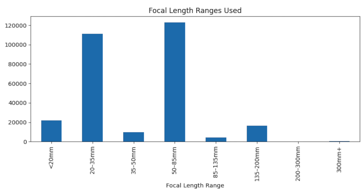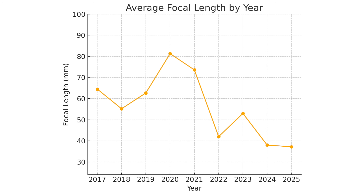Looking at focal length ranges, I shoot a lot between 20 and 35mm — most of that is at 35mm — a little between 35 and 50, and quite a bit between 50 and 85. I've also shot a decent amount between 135 and 200mm. The average focal length by year is very telling: I was shooting between 60 and 70mm early on, spiked in 2020 when I picked up the 70-200, and then sharply dropped to about 38mm in 2025 because I really enjoy that 35mm prime. I do want to start shooting the 70-200 more — telephoto compression really simplifies compositions in a more aesthetic way.